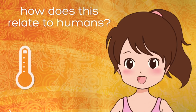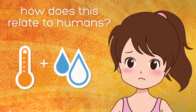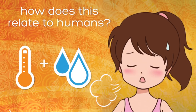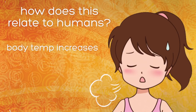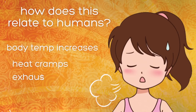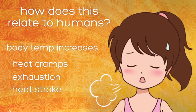With high temperatures and high moisture, we can sweat, but we're not able to remove the heat from our bodies. Our internal body temperature increases, which can lead to such things as heat cramps, exhaustion, or heat stroke.